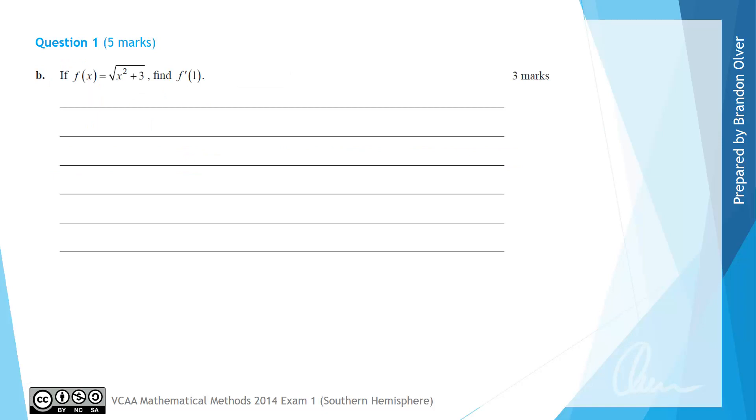For part B we now have the function f of x, with the rule the square root of x squared plus 3, and we're asked to find the derivative when x is equal to 1. Inspecting this we can see there's a function, x squared plus 3, inside the square root function. So we're going to use the chain rule.